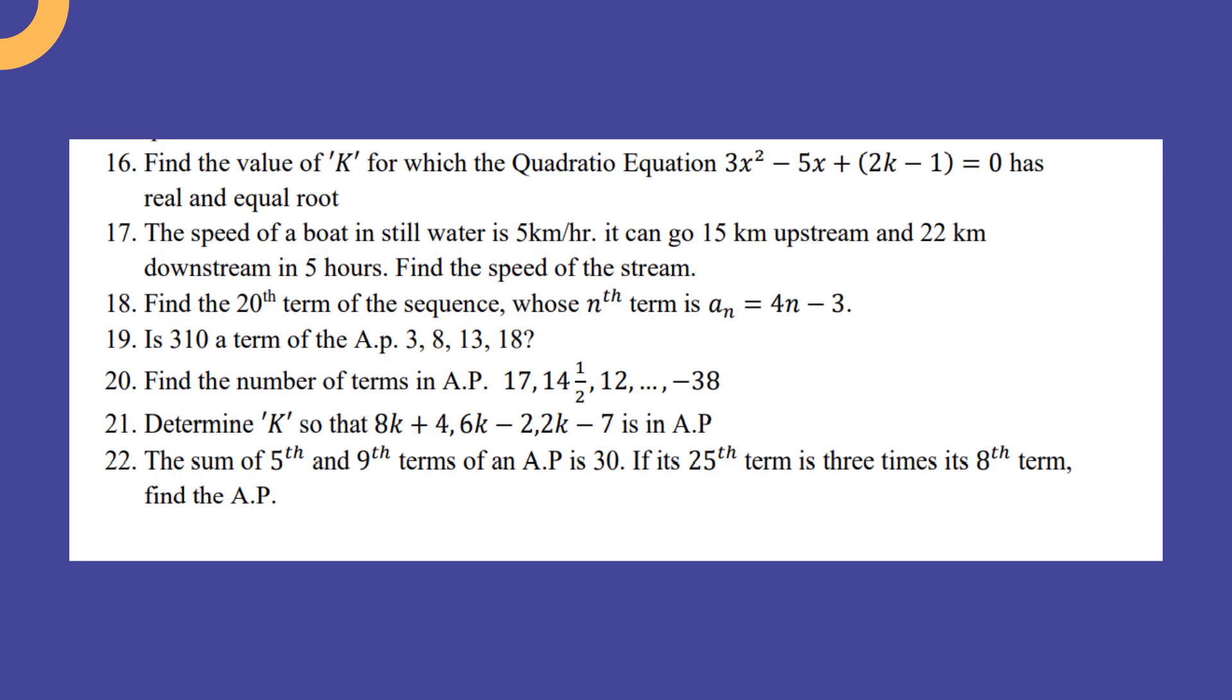Find the number of terms in the AP 17, 14½, 12, ..., -38. Determine k so that 8k + 4, 6k - 2, 2k - 7 is in AP. The sum of the fifth and the ninth term of an AP is 30. If its 25th term is 3 times its 8th term, find the AP.